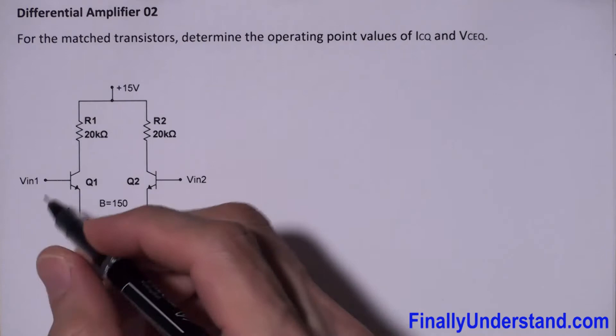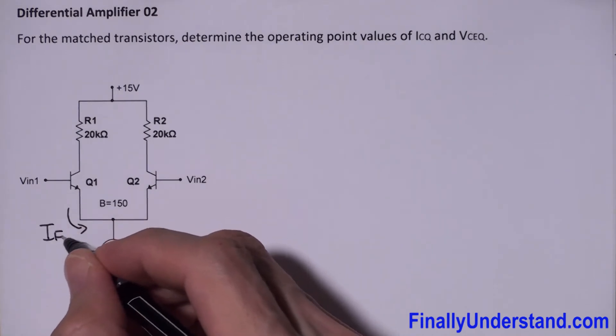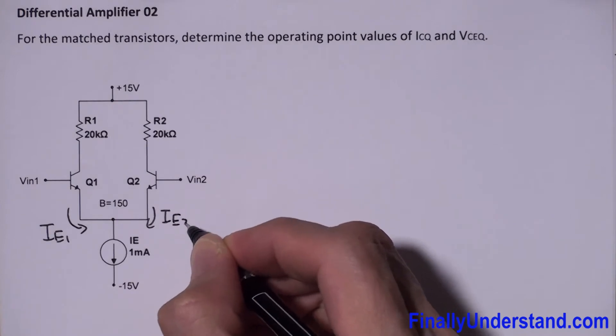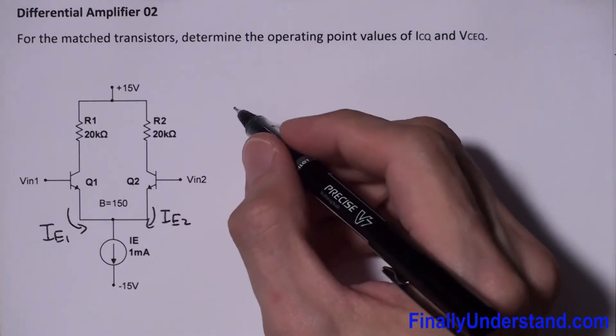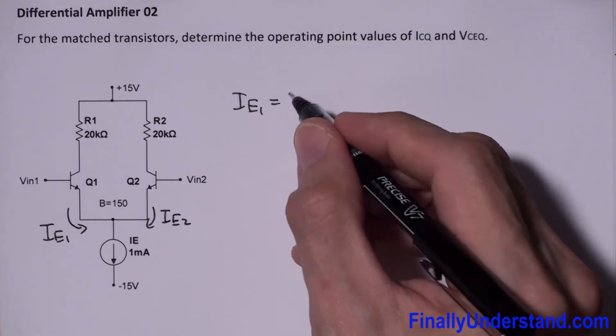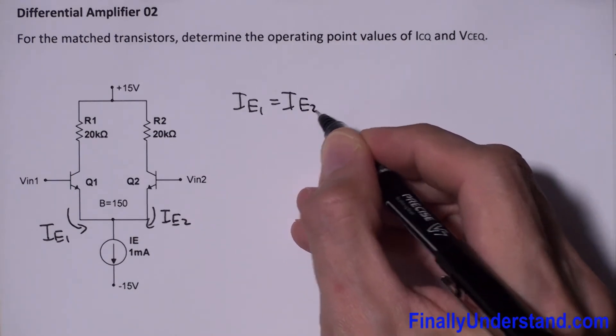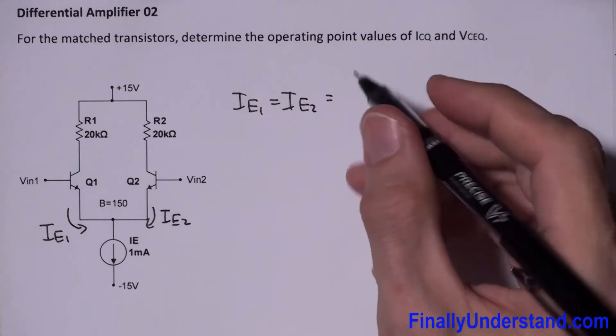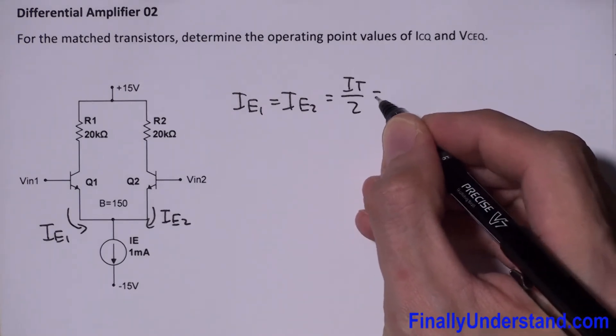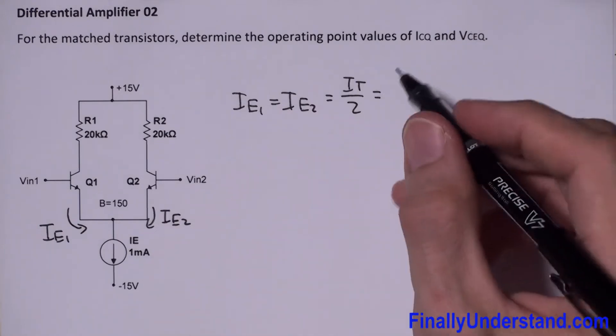IE1 and IE2. Keep in mind that IE1 is equal to IE2, and this is nothing else just half of the tail current, so IT divided by 2.